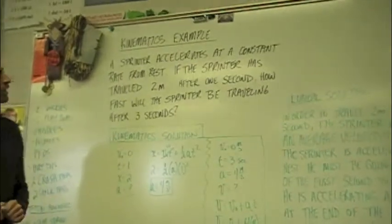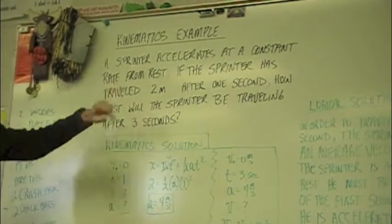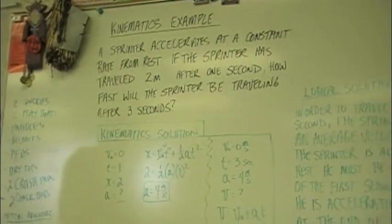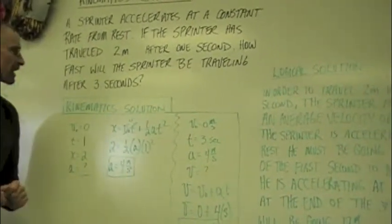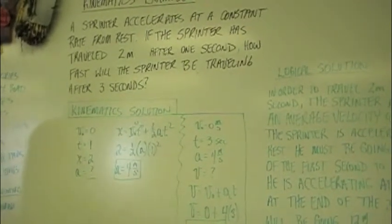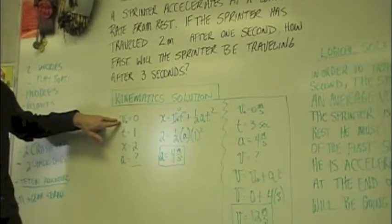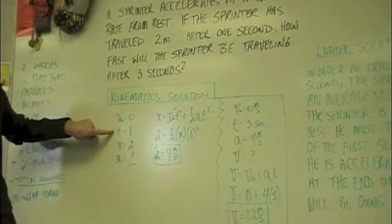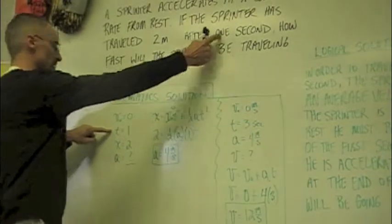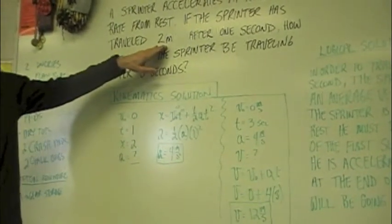Looking at the problem, a sprinter accelerates at a constant rate from rest, so V-naught is zero. If the sprinter has traveled two meters after one second, how fast will the sprinter be traveling after three seconds? So we know: initial velocity is zero, time is one second, and distance traveled is two meters.